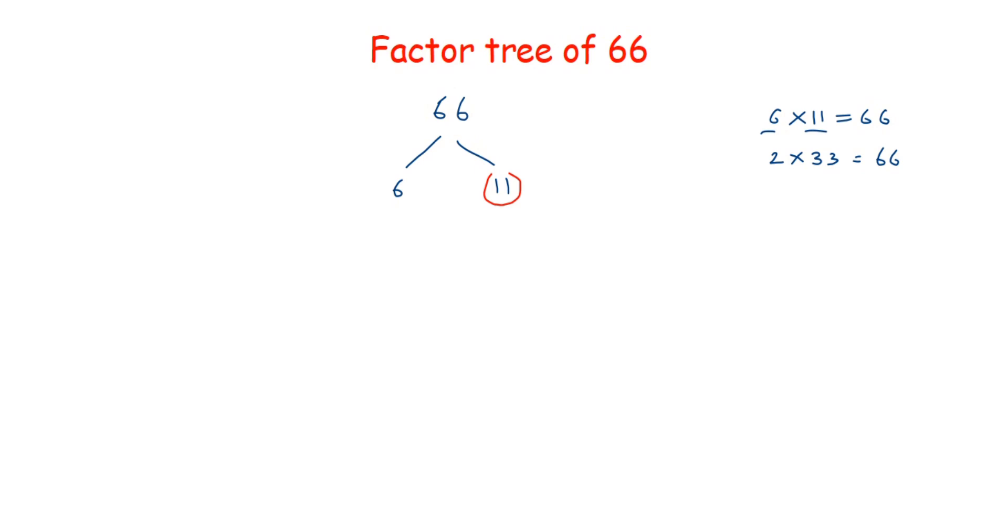And next we have a number 6. Now 6 is a composite number, we can split it further. So we have to split it into two factors, like 2 times 3 is 6. So we can write as 2 and 3 here. 2 and 3 both are prime numbers, so we'll circle them.